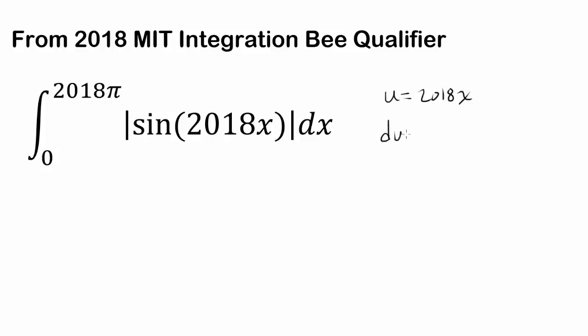So we know du is equal to 2018 dx, differentiating this, so we need 2018 dx, so let's multiply by 2018 and divide by 2018 to keep the equality and to force du to appear inside our integral.